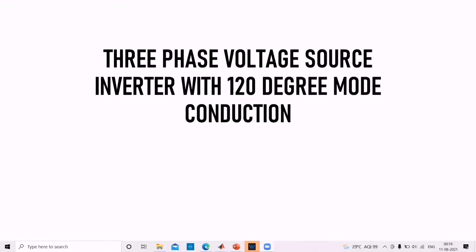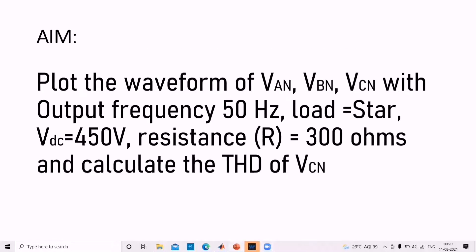In today's video, we will see how to simulate a 3-phase voltage source inverter with 120 degree mode conduction. The aim is to plot the waveform of VAN, VBN, and VCN with output frequency 50Hz, a star connected load, VDC of 450V, resistance 300 ohms, and finally we will calculate the THD of VCN.